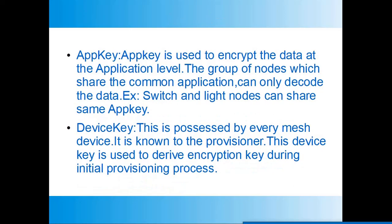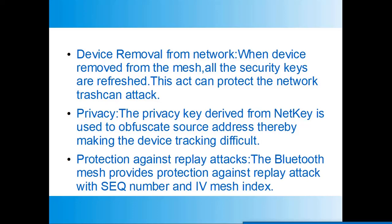At the application level, an app key is used to encrypt data. Only the group of nodes sharing a common application can decrypt this data. For example, a switch and a light can form a group and share the same app key, so when the switch is operated the light node can decrypt the data and change the light status. At the device level, a device key is used — it is possessed by every mesh device and known to the provisioner. This device key is used to derive the encryption key during the initial provisioning process.